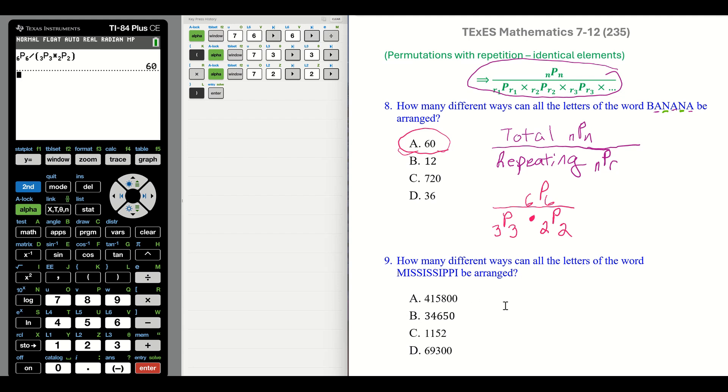Number 9: How many different ways can all the letters of the word Mississippi be arranged? By the way, these two words, banana and Mississippi, they're very popular. You'll find them in videos and in textbooks. In the word Mississippi, first off, that is going to be 11 different letters.